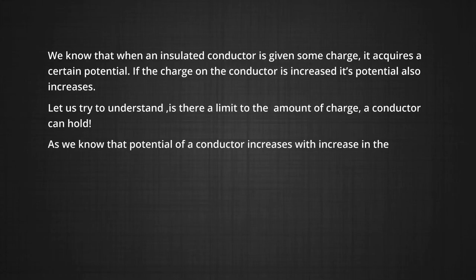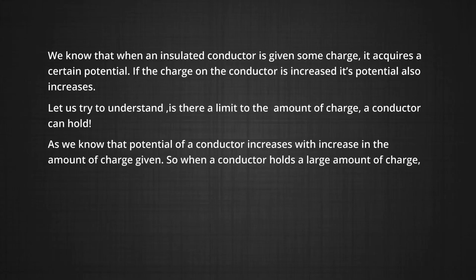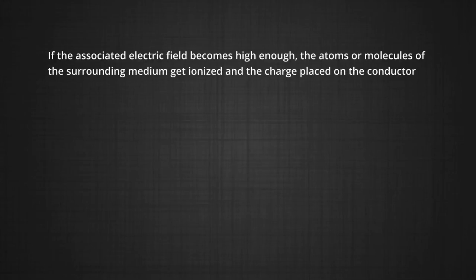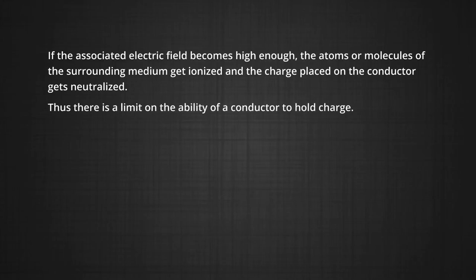As the potential of a conductor increases with increase in amount of charge given, so when a conductor holds a large amount of charge, its potential also becomes very high. If the associated electric field becomes very high, the atoms or molecules of the surrounding medium get ionized, and the charge placed on the conductor gets neutralized. Thus, there is a limit on the ability of a conductor to hold charge.